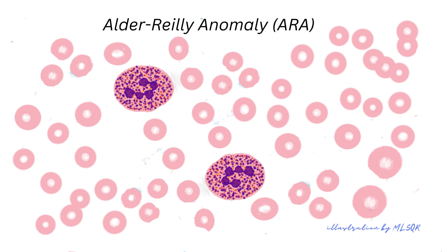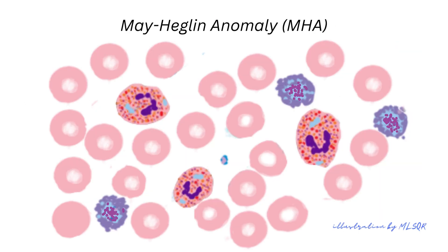Sometimes these granules appear in clusters, and they resemble toxic granulations. Toxic granulation is also seen in the lymphocytes and monocytes.